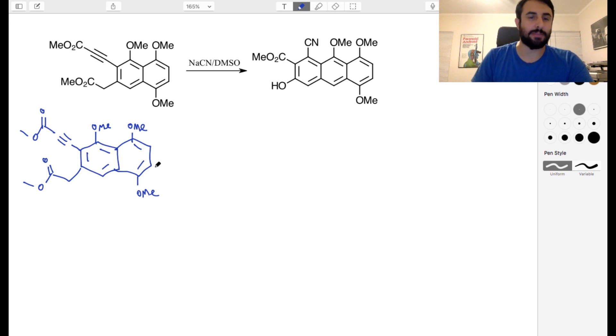Let's take a look at this mechanism. To start, I've redrawn this with these functional groups explicitly written out because that is going to be important. So what are we going to do? What is the reagent? We've got NaCN in DMSO. DMSO is just the solvent, so we've got CN minus. CN minus is a nucleophile. So we have to figure out where is this thing going to attack?